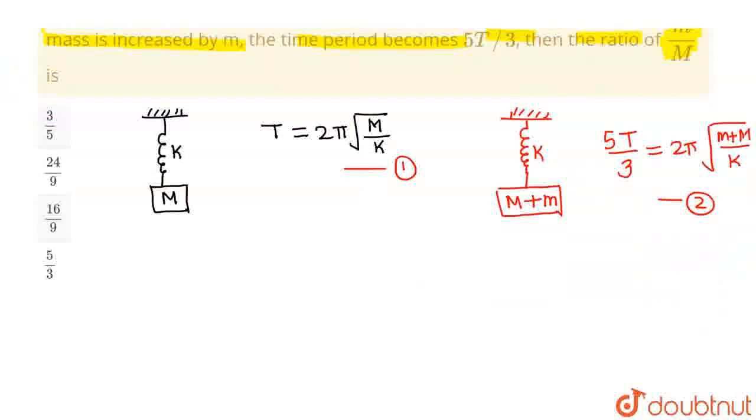Now, what I will be doing is simply dividing equation 2 with respect to equation 1. So equation 2 divided by equation 1 will come out to be 5T/3 by T, this is 5/3. On the right hand side, 2π and 2π will cancel out and √k and √k will also cancel out. So I will be getting √(m+M) divided by √M.